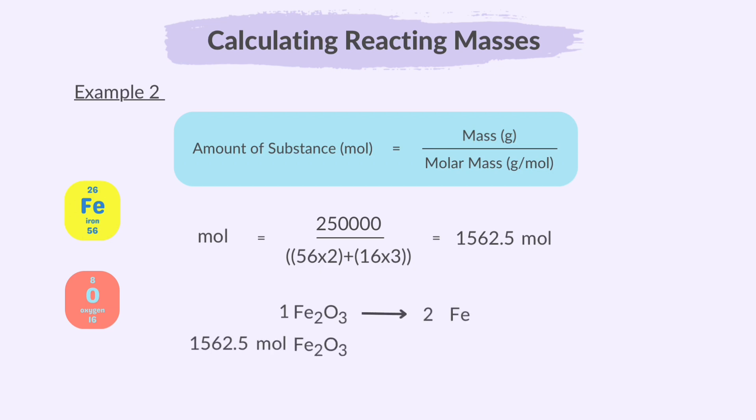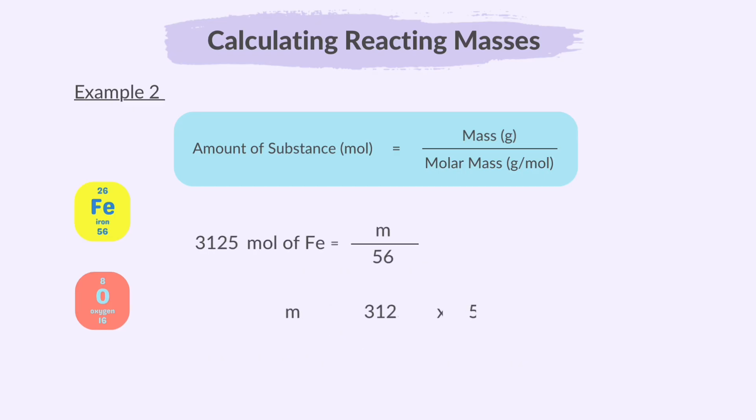We multiply this by 2 to get the number of moles of iron produced which is 3,125. Now, we substitute this number of moles into the mole formula to get 175,000 grams of iron. We convert this to kilograms because the question requires the answer to be given in kilograms. So, 175 kilograms of iron are produced.